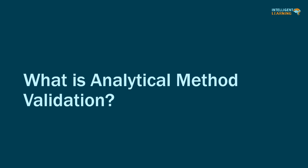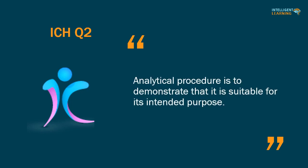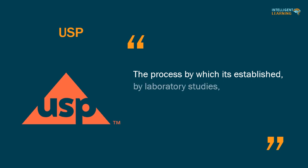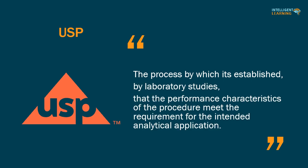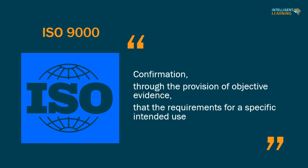What is analytical method validation? Different international documents define it differently. As per ICH Q2 guidelines, an analytical procedure is validated to demonstrate that it is suitable for its intended purpose. The United States Pharmacopoeia (USP) defines it as the process by which it is established by laboratory studies that the performance characteristics of the procedure meet the requirements for the intended analytical application. ISO 9000 defines it as confirmation through objective evidence that requirements for a specific intended use have been fulfilled.